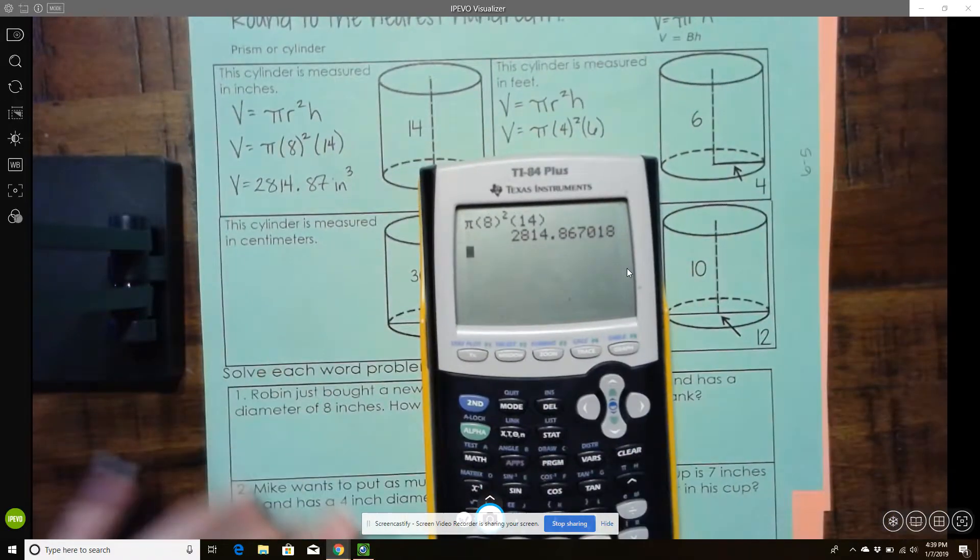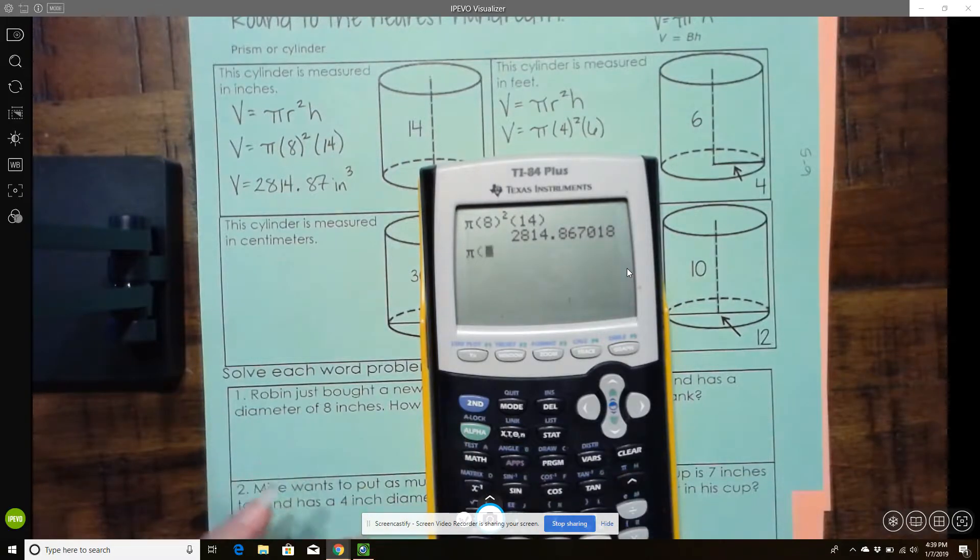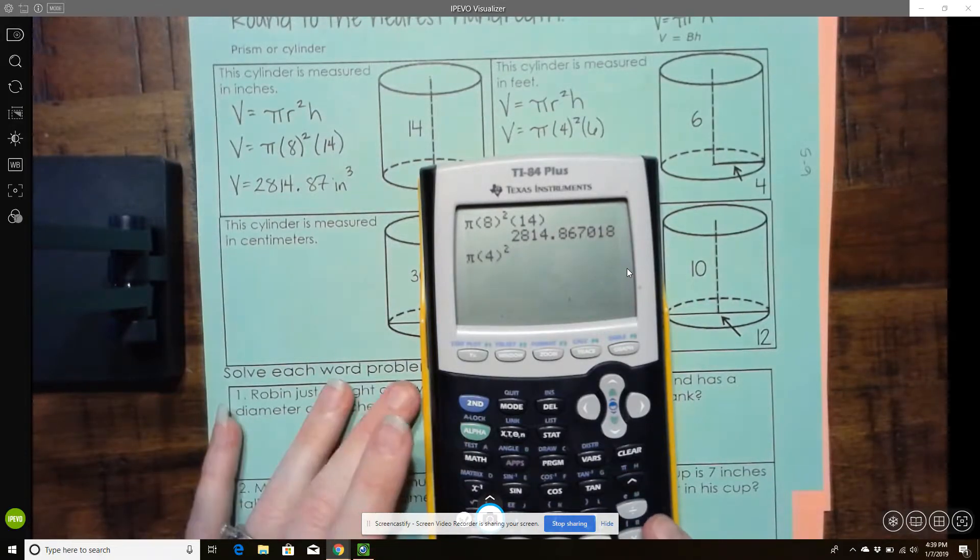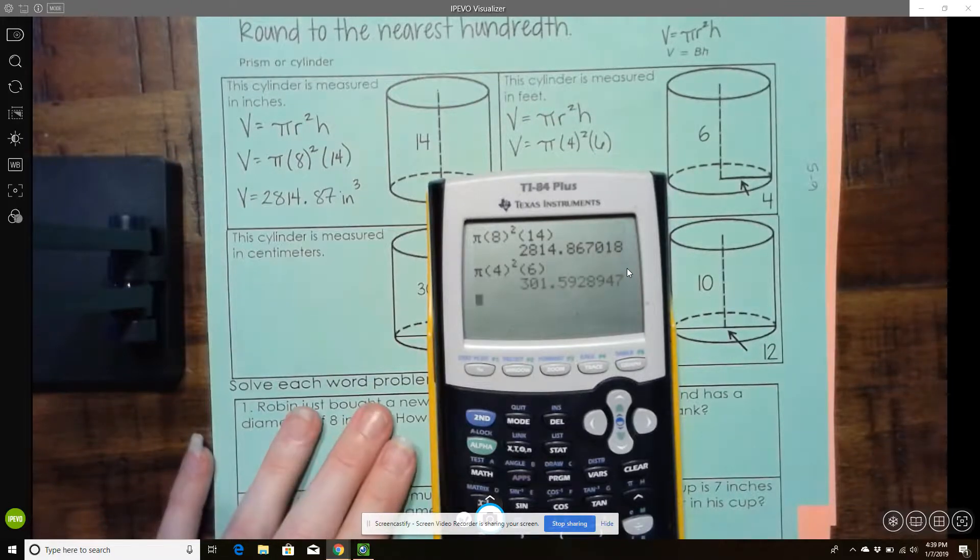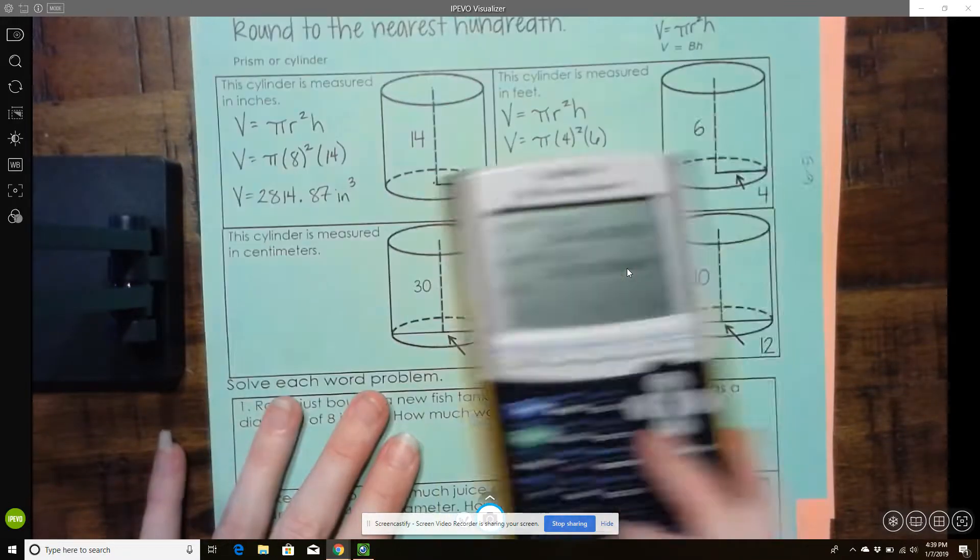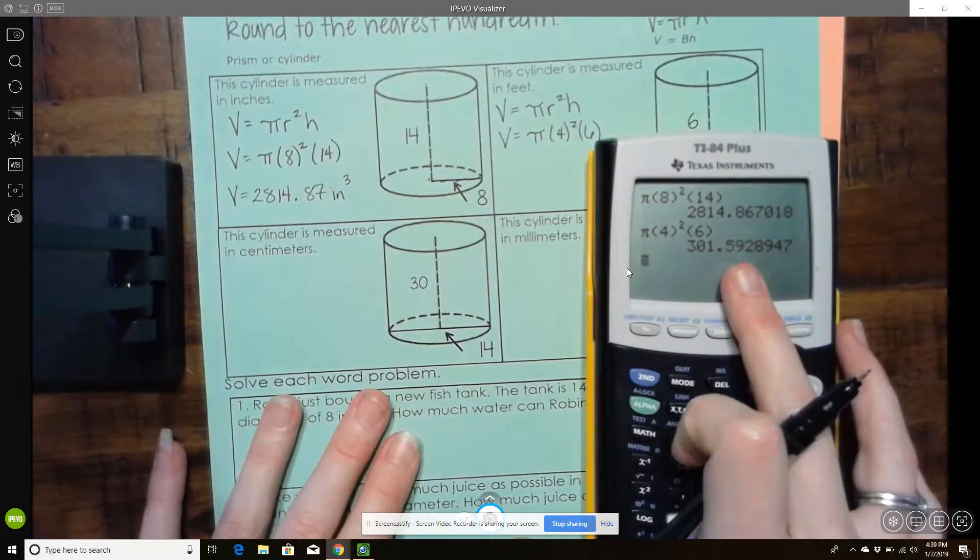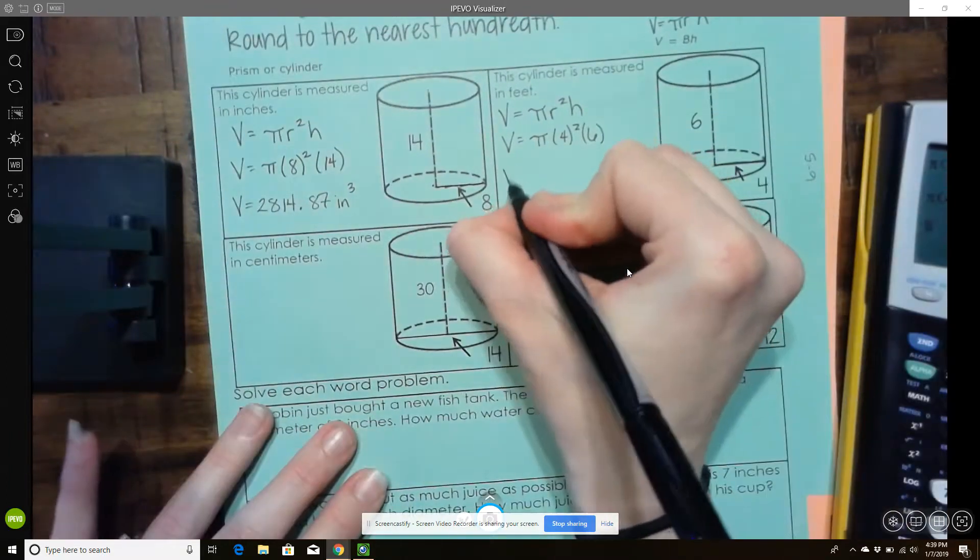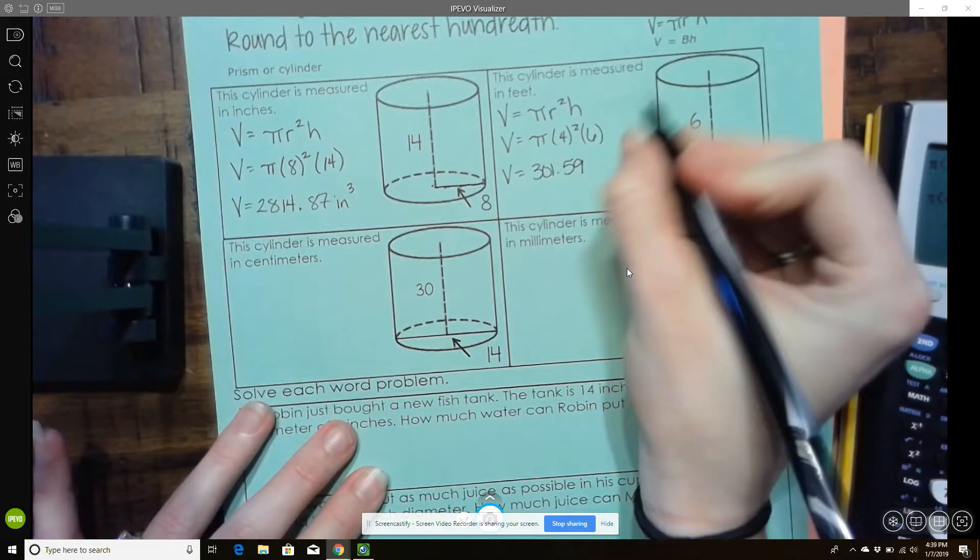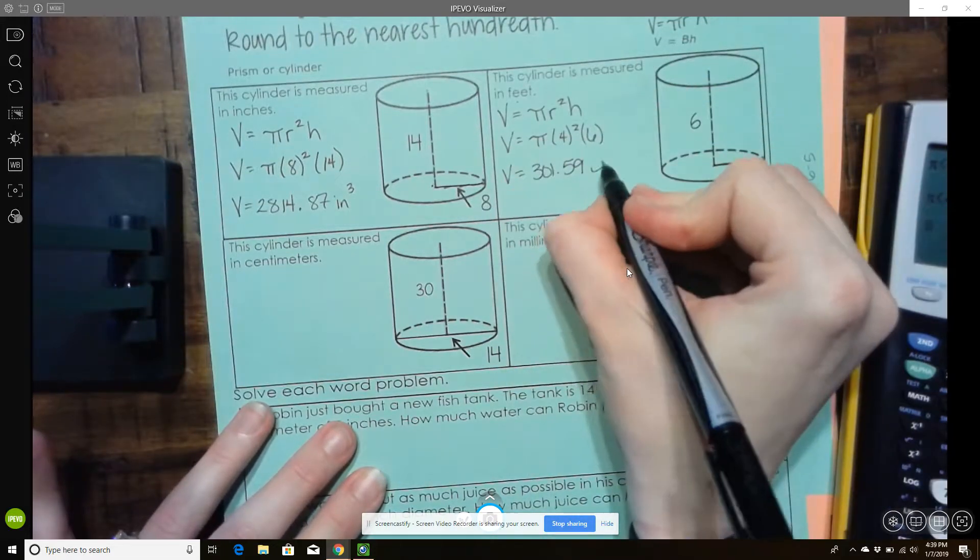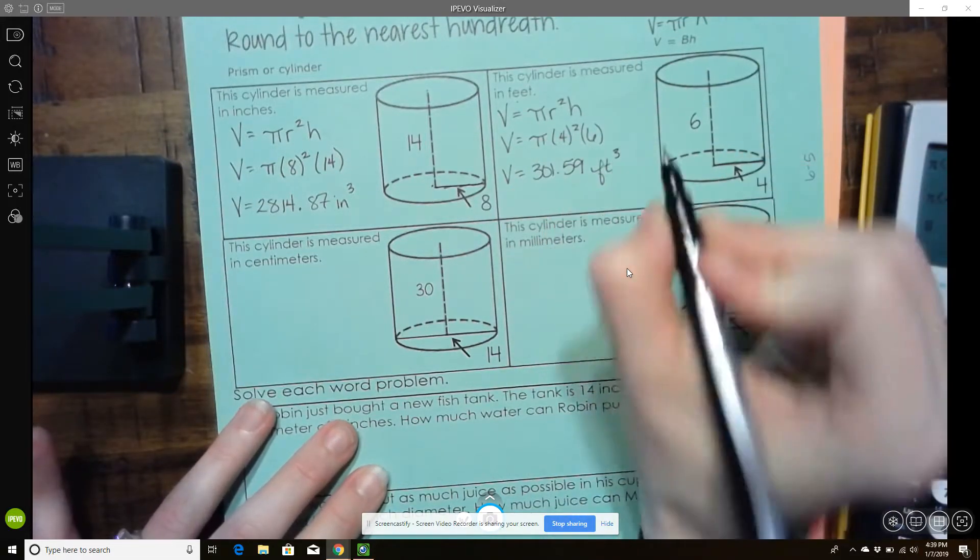So again, same thing here. I can just do pi 4 squared and then times 6. And so for this one, again, we're rounding to the hundredths. So volume equals 301.59. It's measured in feet. So feet cubed.